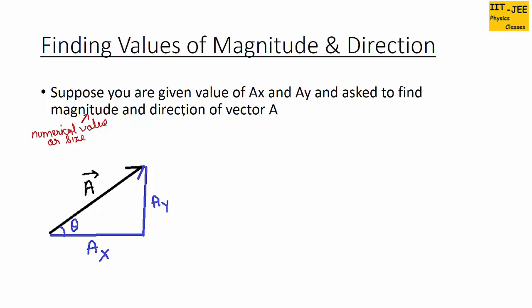Magnitude means the numerical value of the vector, or the size of the vector. Direction means the angle of the vector from the positive x-axis. To find the magnitude, we will use the Pythagorean theorem, which is about the right angle triangle. Look at this triangle — it is a right angle triangle.